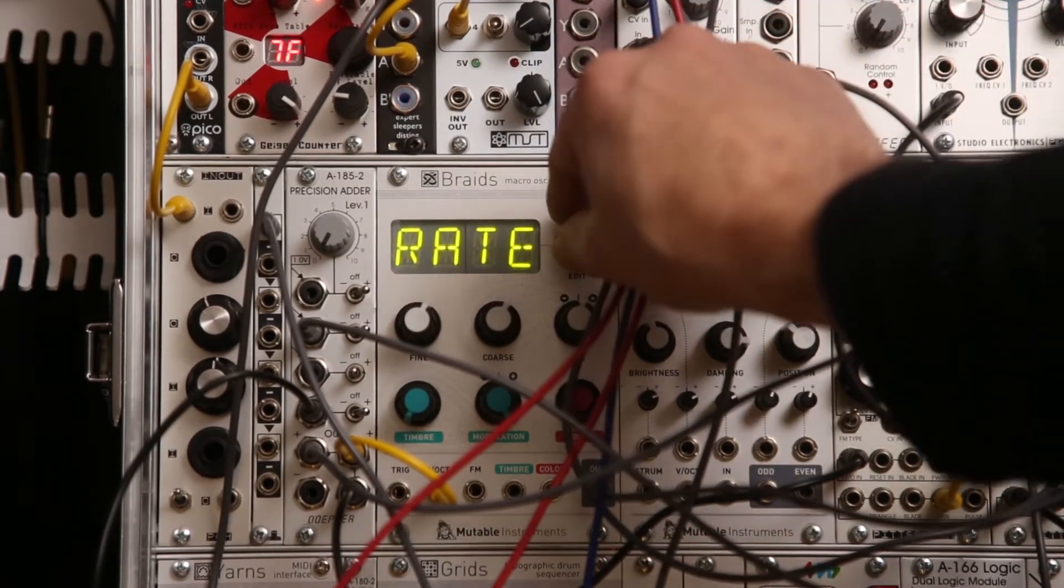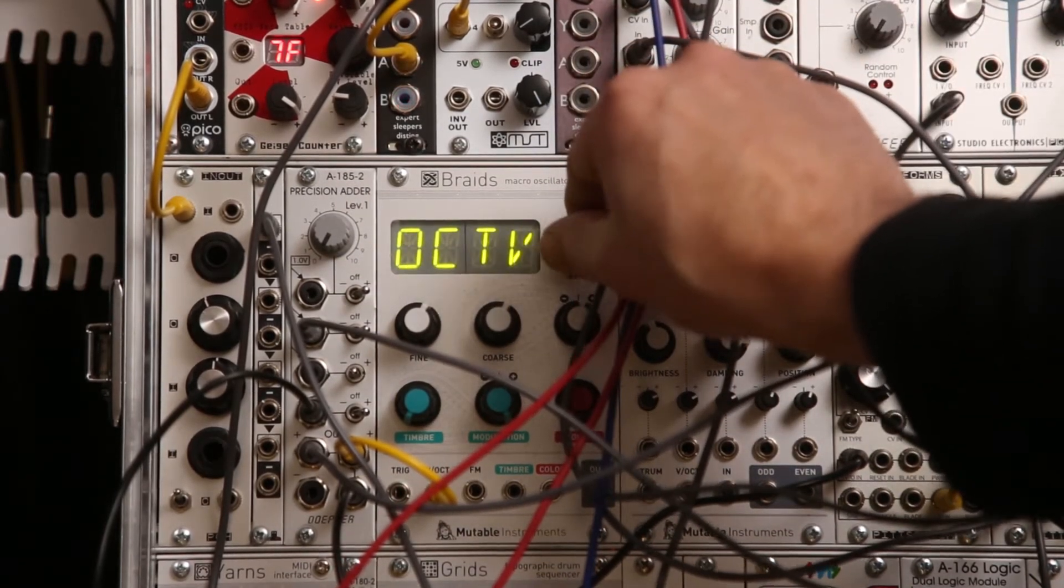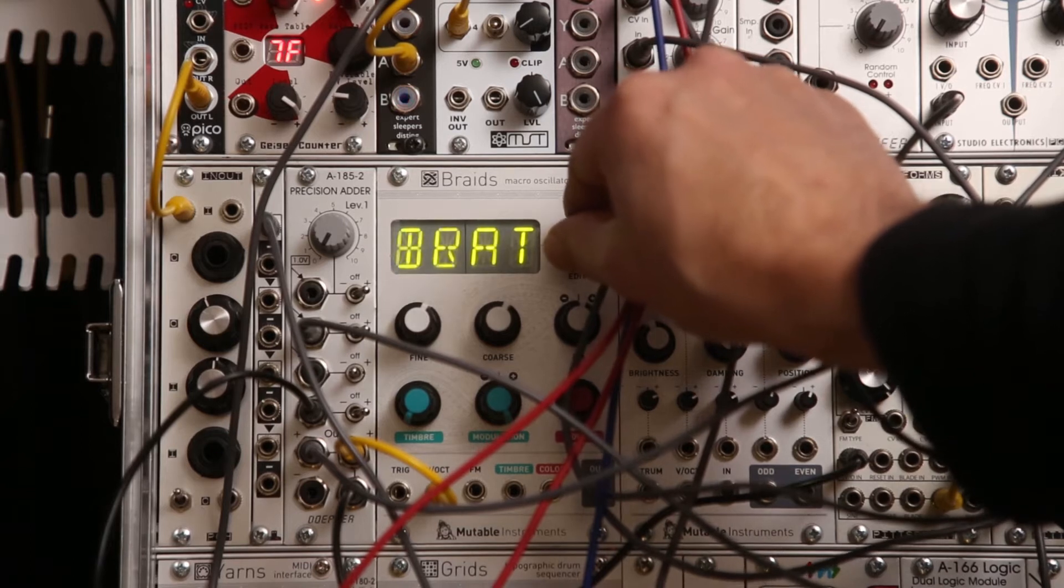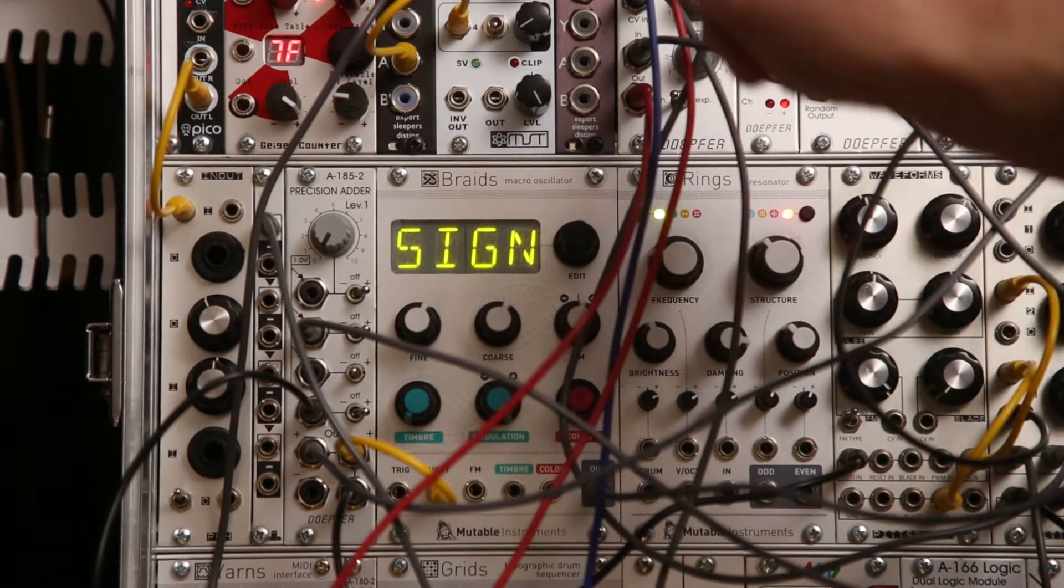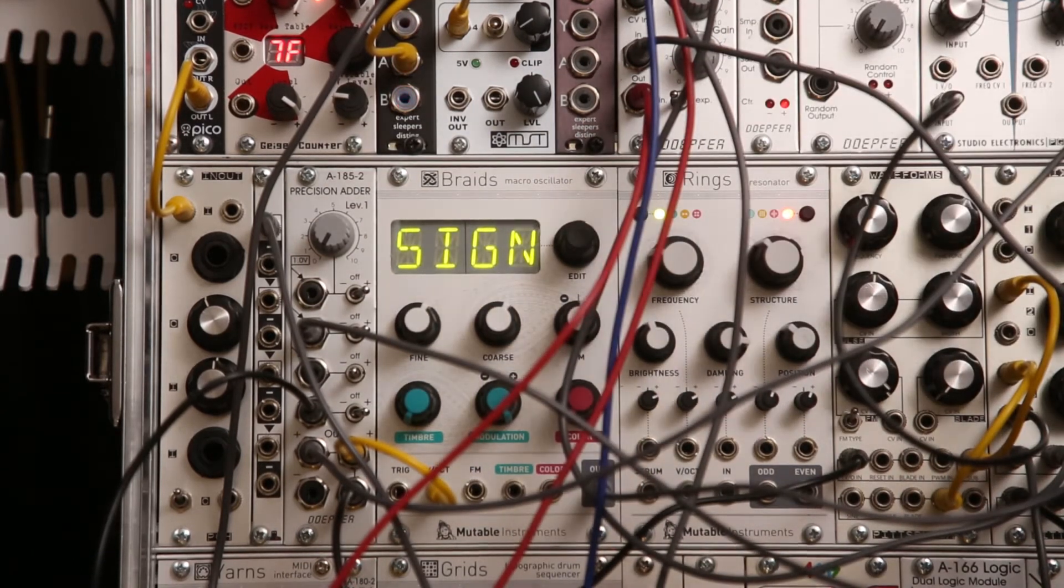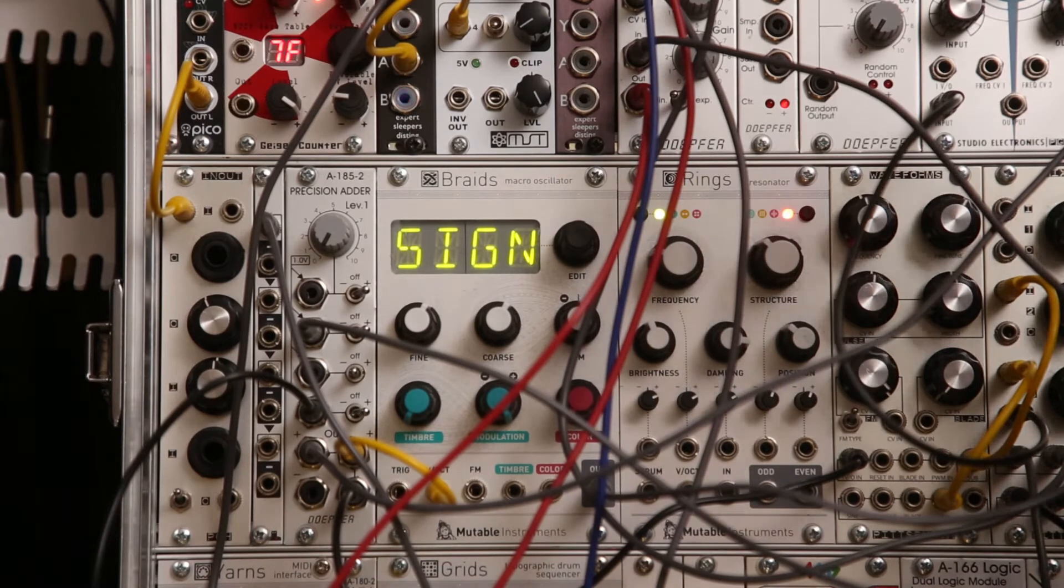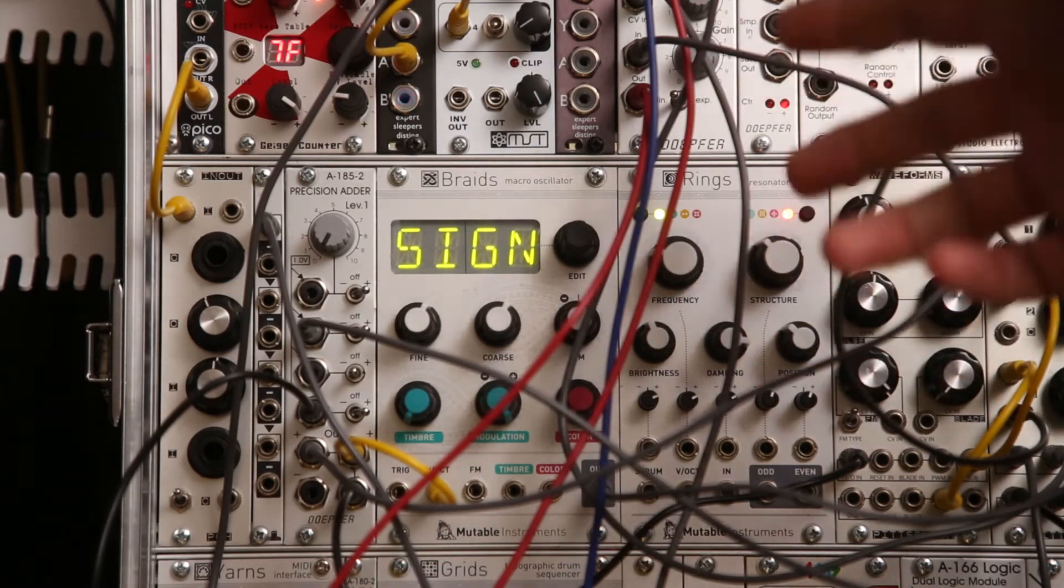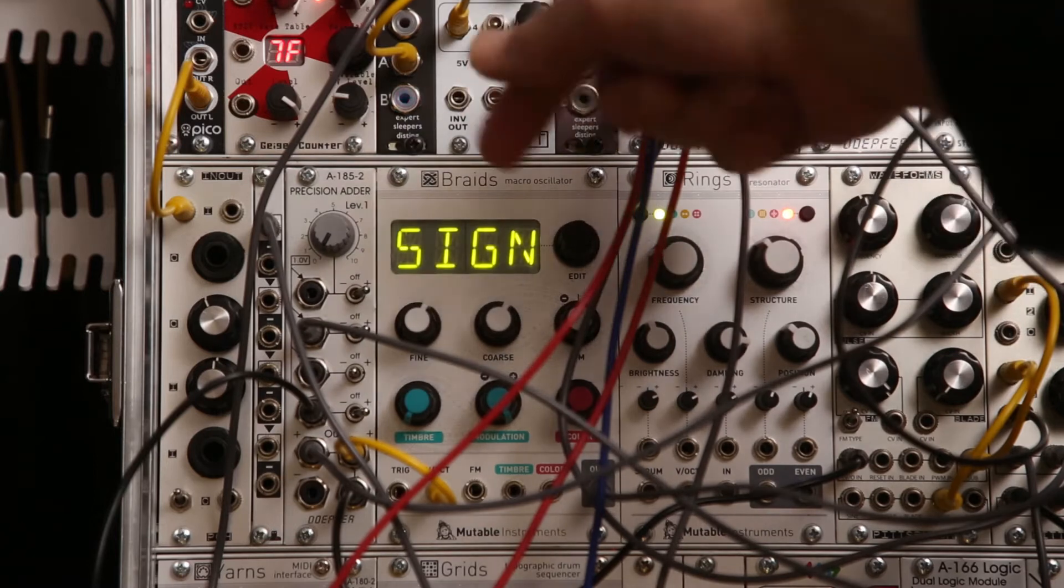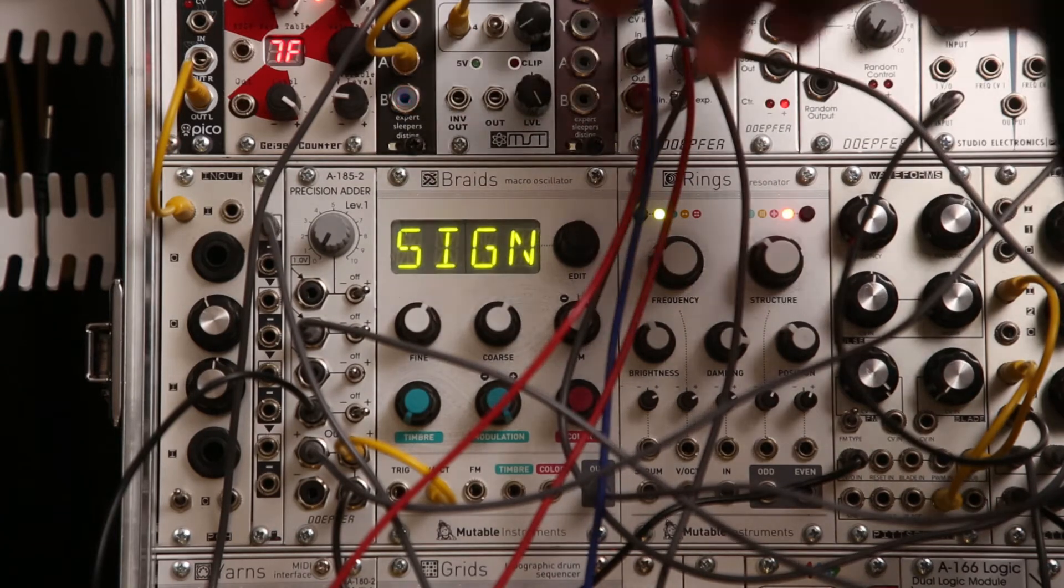Second option is the sign all the way towards the end of the menu range. Sign is short for signature. And basically it's some quirkiness that is unique to every individual module. In my case it just distorts the heck out of it.